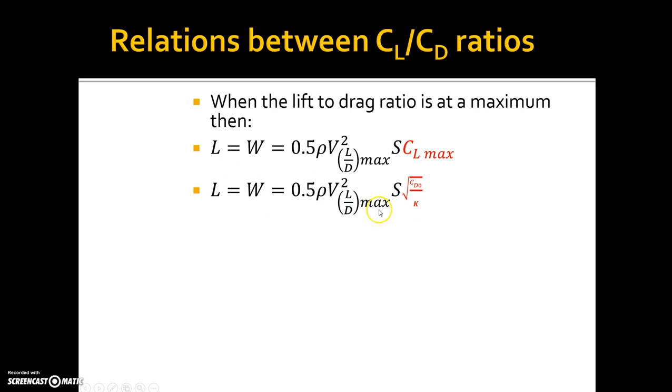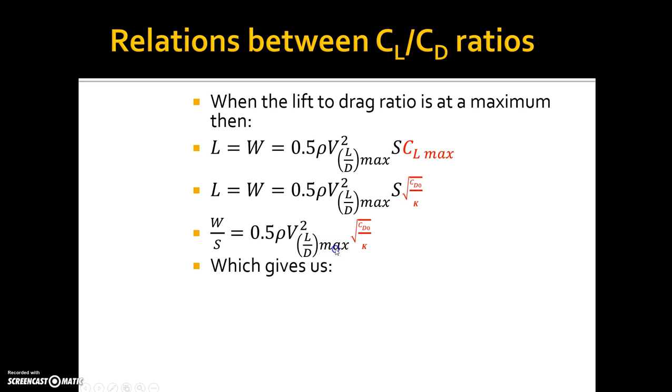And I am just going to take this equation and rearrange it to get a value for V. So I will begin by bringing the S across, so that is the wing loading. And then I am just going to cross multiply and leave V squared lift to drag ratio max to one side, which gives me this equation here.